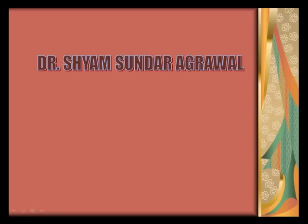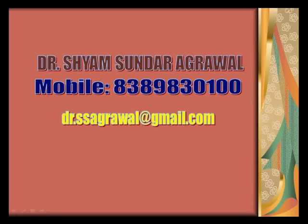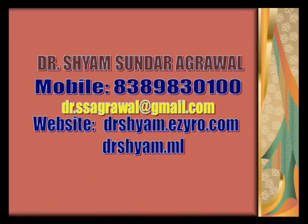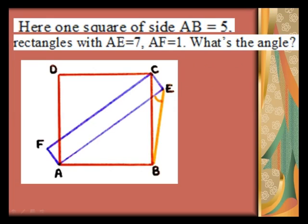Hello friends, once again I am here with a new problem. Here one square of side AB equals 5 centimeters is given.